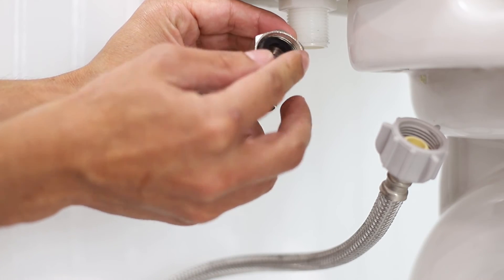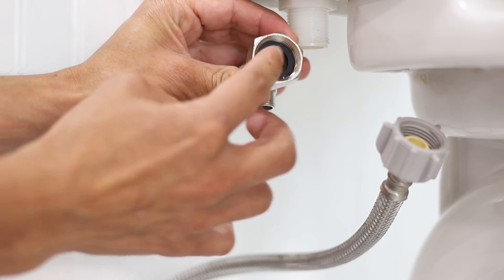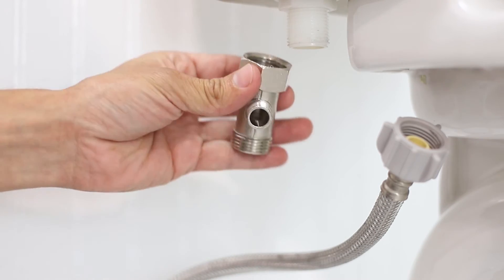Insert the black rubber washer into the provided T-valve and connect the T-valve to the fill valve under the toilet tank. Do not over tighten.